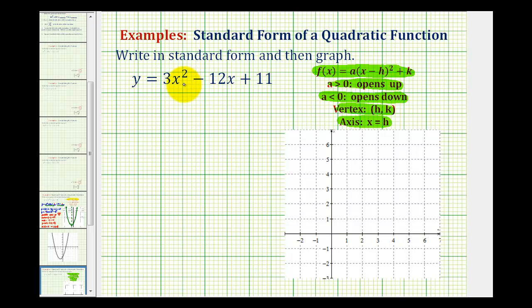So to start this process, we're going to isolate the x squared term and the x term. So we're going to have y equals 3x squared minus 12x. Now, because we want to create a perfect square trinomial, we're going to have to add a constant here. So we'll leave space for that. And then we'll have plus 11. And then whatever constant we add here, we'll have to subtract here to maintain equality.